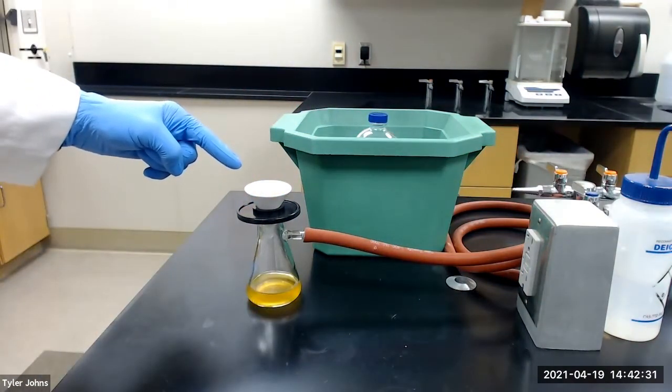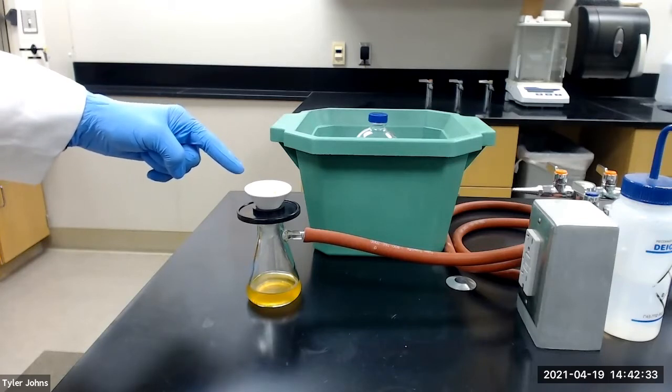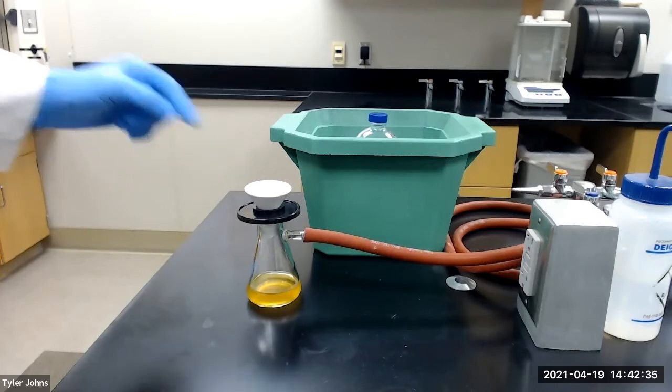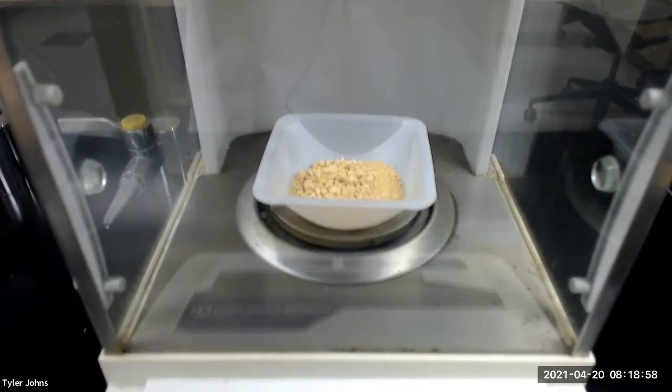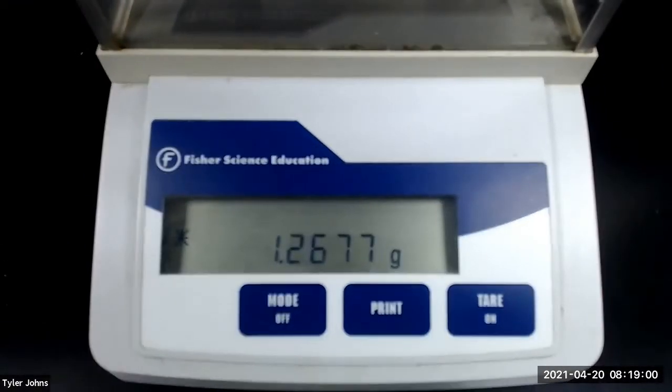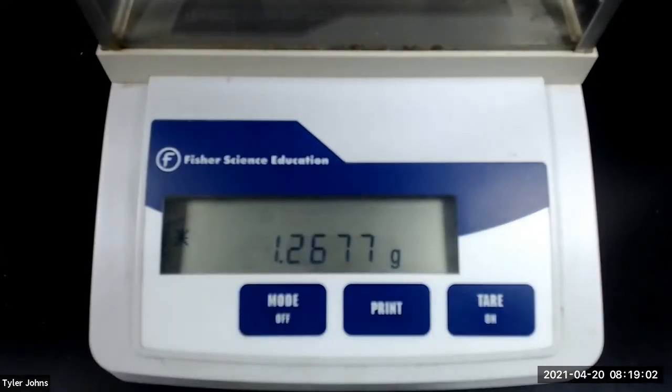After drying for 30 minutes, we will next determine the mass of the crude product. The mass of the crude product is 1.2677 grams.